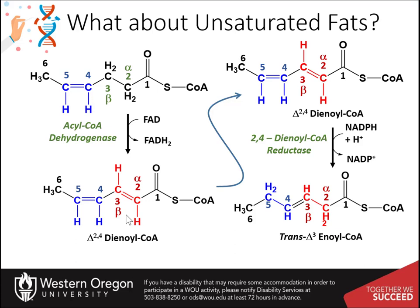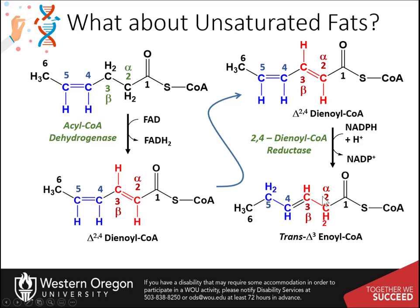This is where the 2,4-dienoyl-CoA reductase does its work. This reduction adds two electrons and two protons to the molecule to remove the two double bonds and replace them with one trans double bond between carbons 3 and 4. With the diene, one hydrogen and one electron are added to the carbon 5 position, and electrons from the 3-carbon and 4-carbon each fold inward and create the new double bond between the 3-carbon and 4-carbon position.